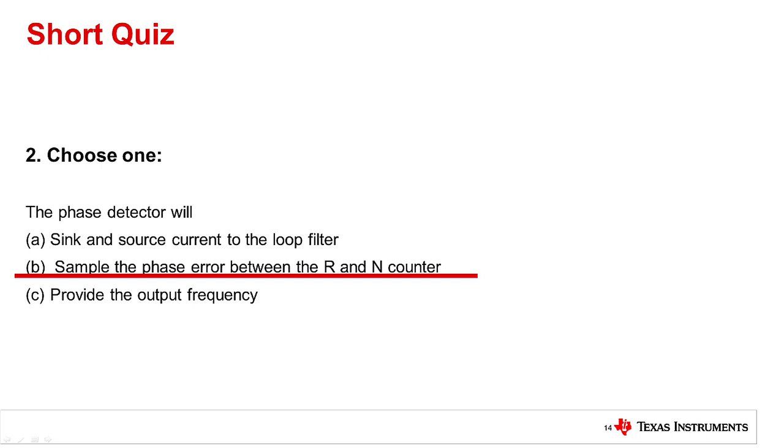The answer is B, sample the phase error between the N and R counter. It is true that the phase detector is combined with the charge pump, so if we say phase detector and charge pump, then it would also be choice A, but this question says phase detector only, so it just samples the phase error. That's why it's B.